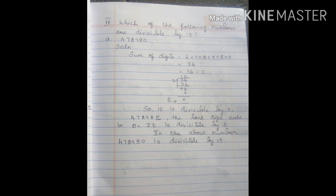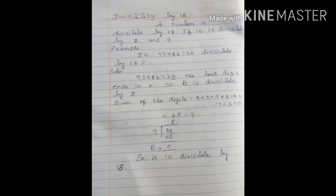Next example from Exercise 3, page number 66, Roman numeral 4: Which of the following numbers are divisible by 15? First: 478980. Write the solution. Sum of the digits: 4 plus 7 plus 8 plus 9 plus 8 plus 0 equals 36. 36 divided by 3, remainder is 0, so it is divisible by 3. The last digit ends in 0, so it is divisible by 5. Therefore 478980 is divisible by 15.